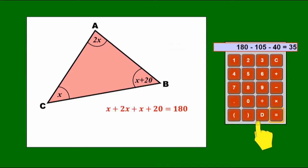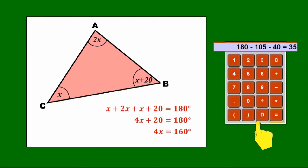So collecting like terms will give me 4X plus 20 equals 180. Subtract 20 from both sides and I get 4X is equal to 160. So X is equal to 40 degrees. And that's how you work out the answer to that question.